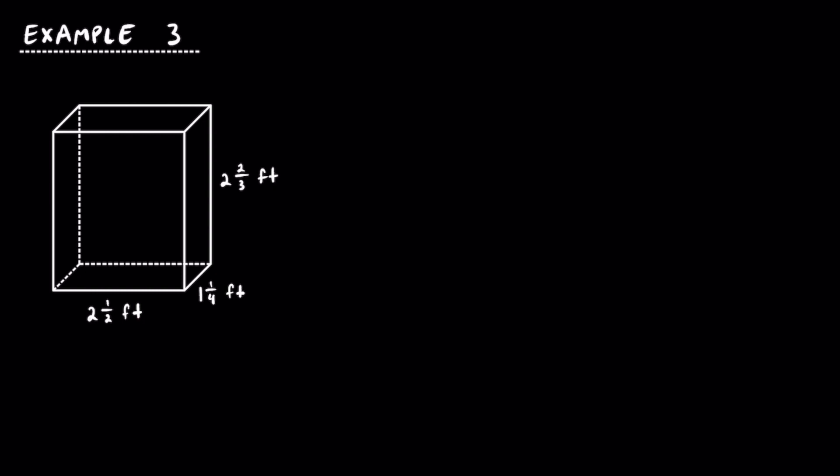Here's a third and final example, but with fractional side lengths. For this rectangular prism, the length is going to be 2 and 1/2 feet, the width is going to be 1 and 1/4 feet, and height is going to be 2 and 2/3 feet. Our formula is volume is equal to the area of the base times the height. The base is a rectangle, so we can say volume is equal to length times width times height. Substituting in our values, we have 2 and 1/2 feet times 1 and 1/4 feet times 2 and 2/3 feet.